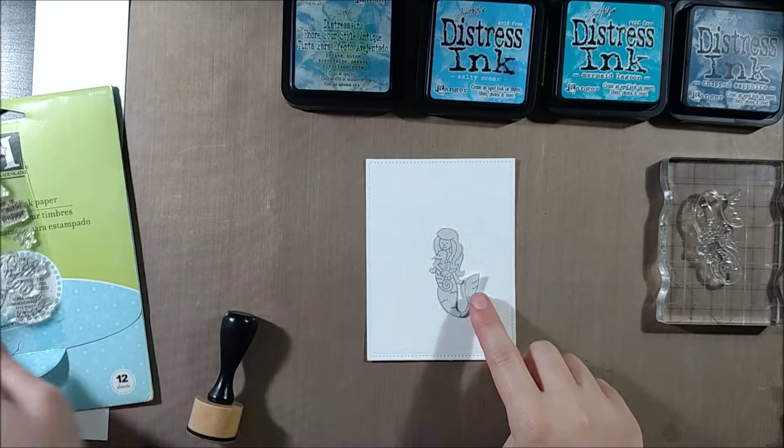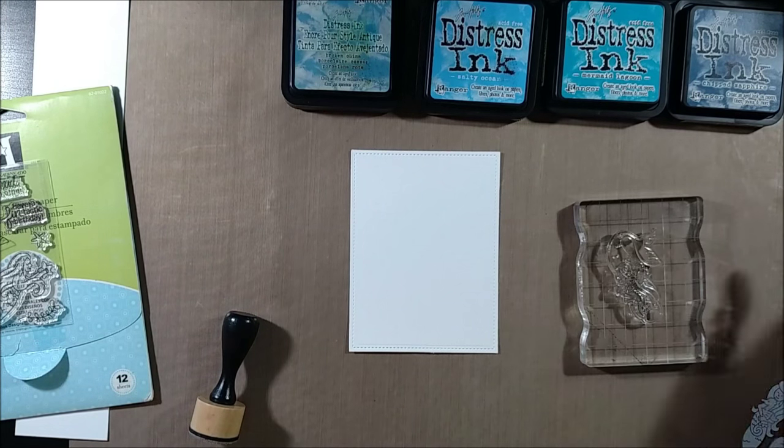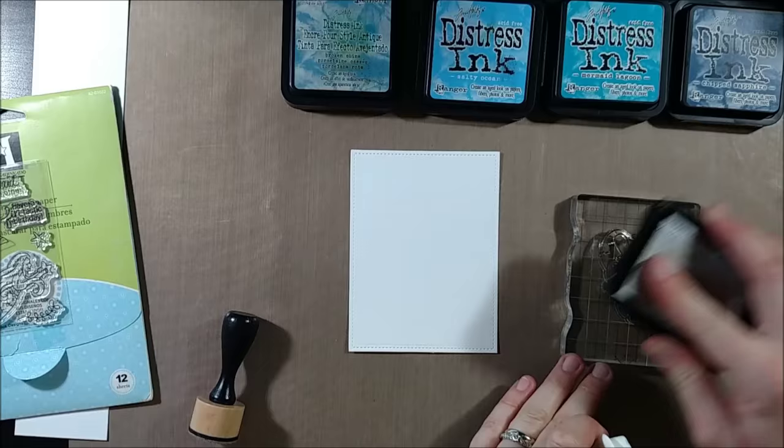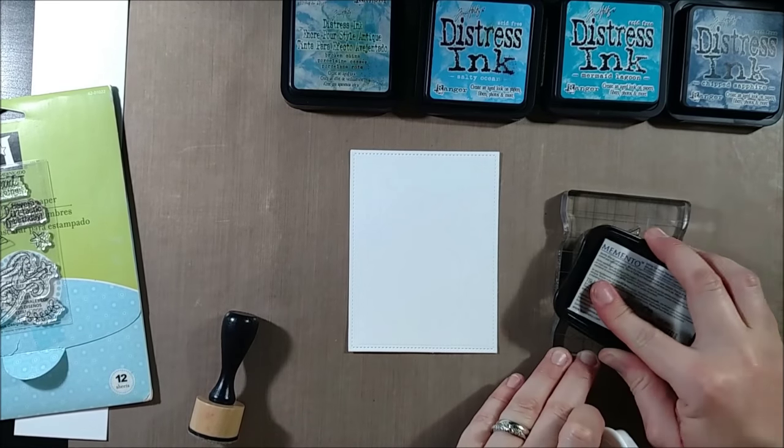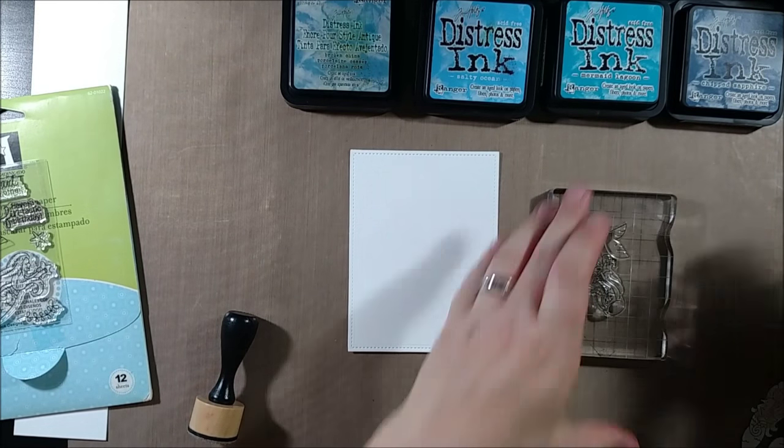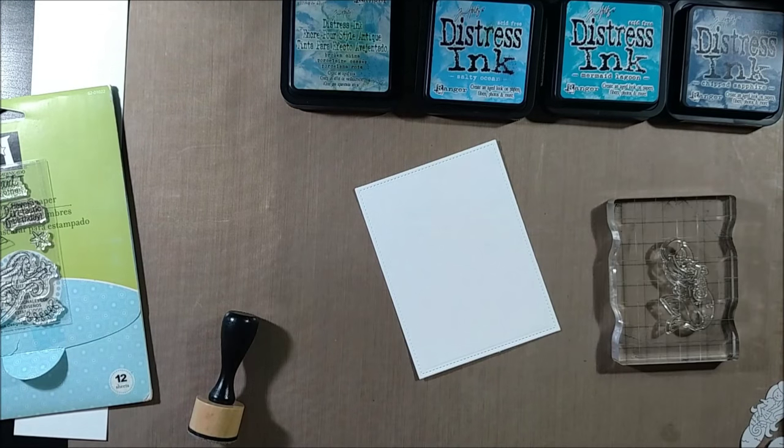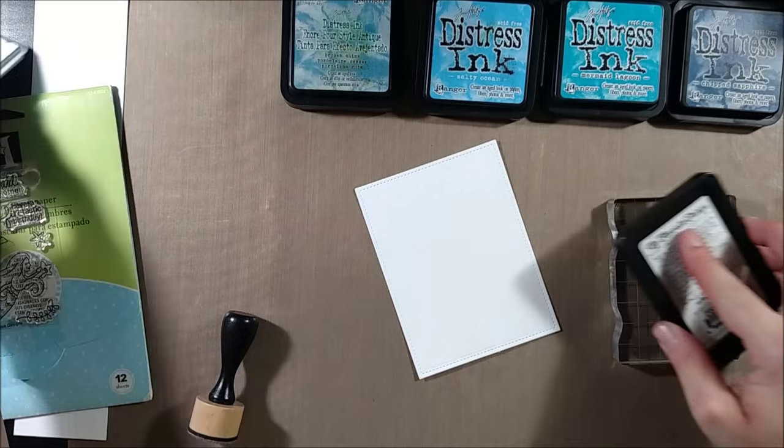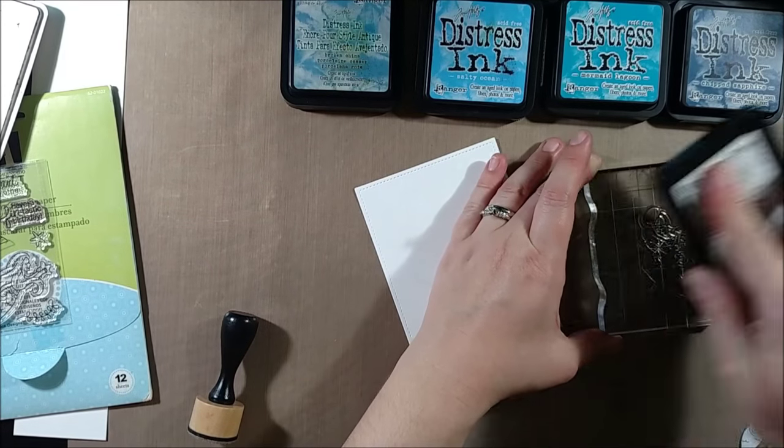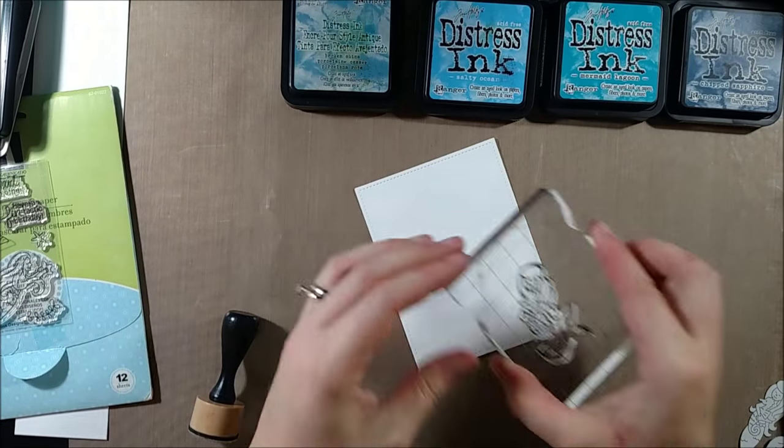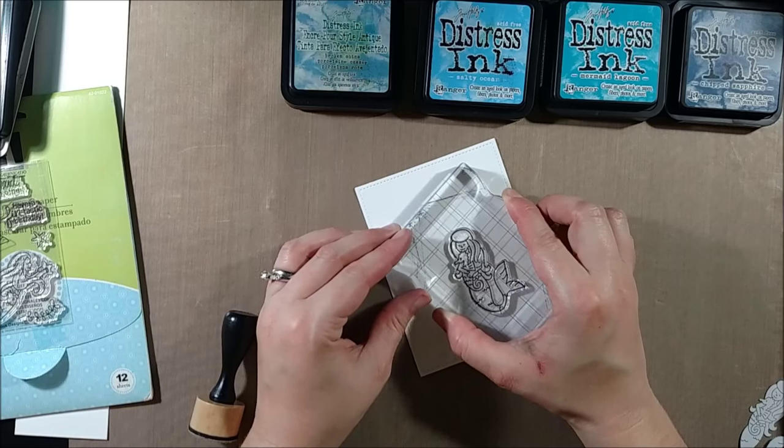So I've cut out the Inkadinkadoo stamping mask paper there. And eventually when I'm done using the mask, I will put the mask on top of my stamp sheet so that it stays with my stamps. And now I'm going to stamp the image onto my stitched rectangle panel here. I'm going to stamp it in My Favorite Things Black Licorice Hybrid ink because I will be doing Copic coloring for the mermaid.